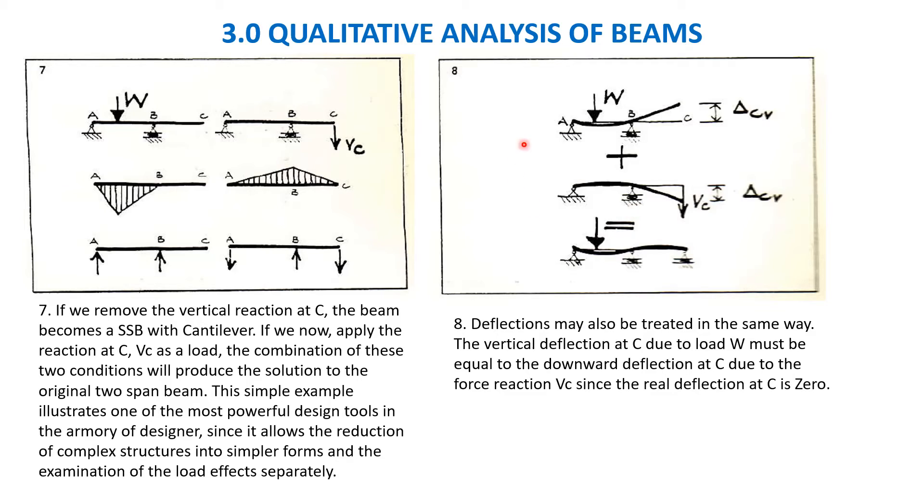The same way we can see the deflections also. Deflections may also be treated in the same way. For example, the vertical deflection delta CV because of this load W. If you apply load W it will go upright, so this vertical deflection delta CV must be equal to the downward deflection.